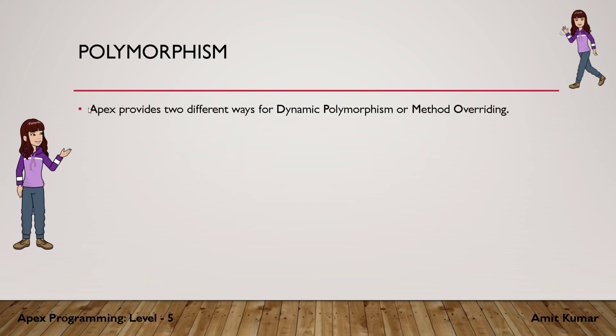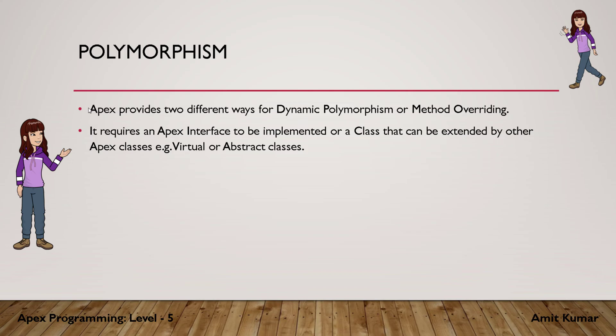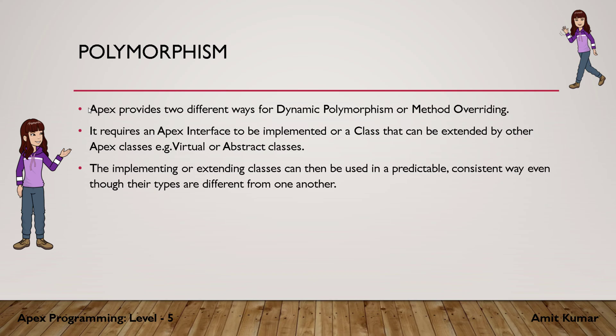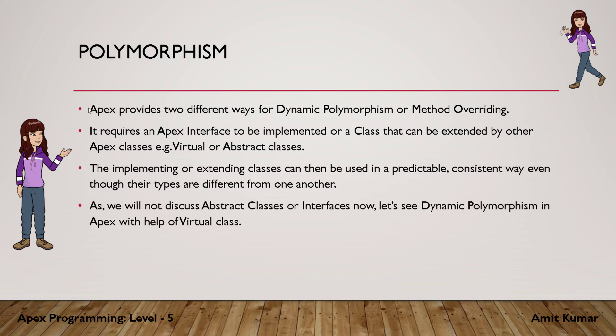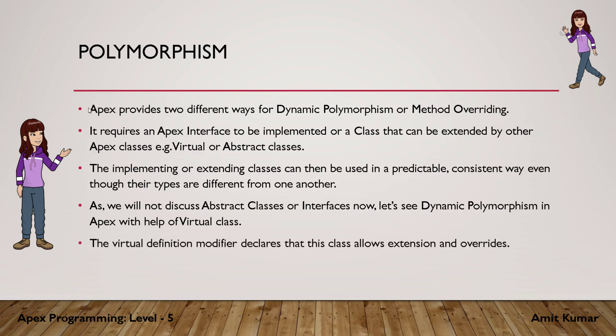For dynamic polymorphism, Apex provides two different ways for method overriding. It requires an Apex interface to be implemented, or a class that can be extended by other Apex classes, such as a virtual or abstract class. So to implement dynamic polymorphism, we either have to implement an Apex interface or extend a virtual or abstract class. The implementing or extending classes can then be used in a predictable, consistent way even though their types are different. Let's see dynamic polymorphism in Apex with the help of a virtual class.